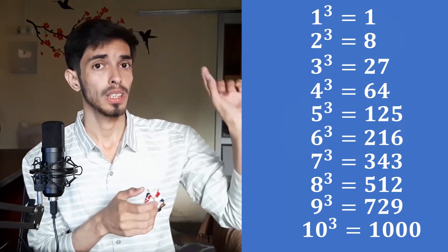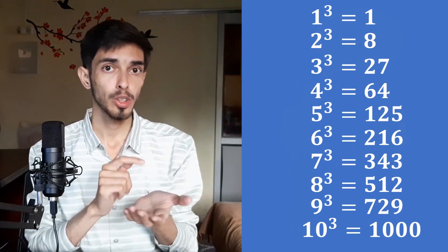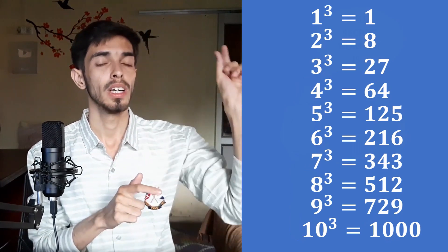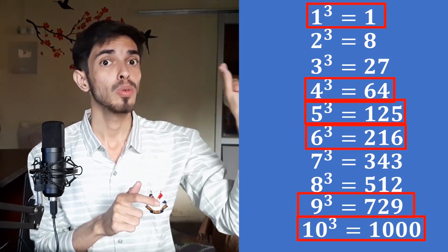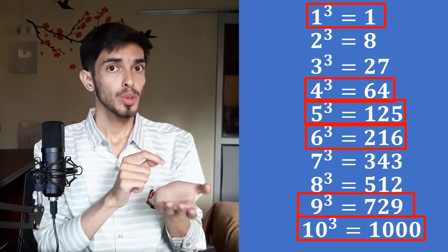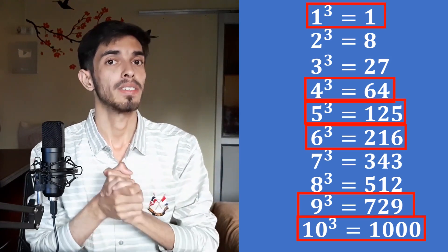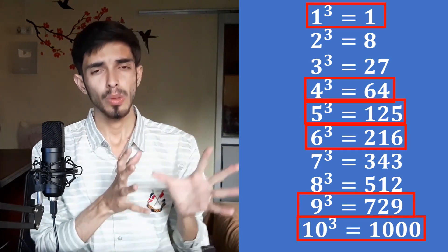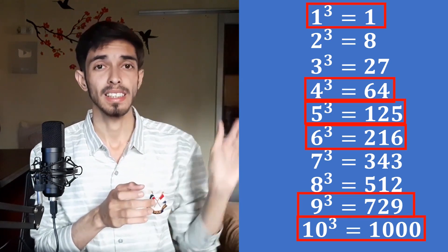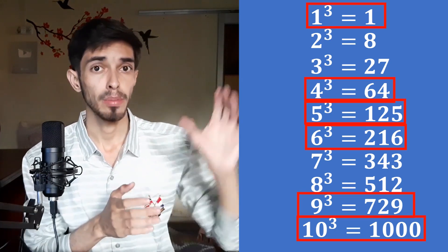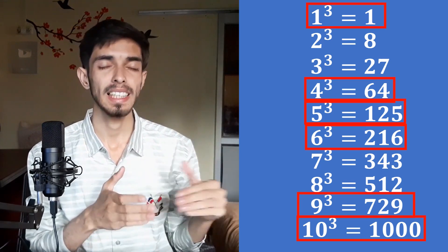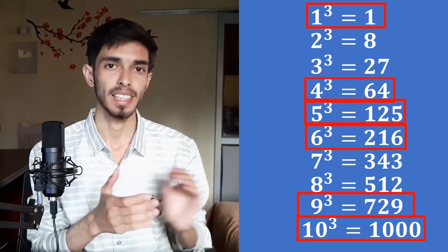Another thing you need to focus on is what digit each cube is ending with. It's really easy because for some numbers, the cube ends with that same digit. For example, for 1, 4, 5, 6, 9, and 10, the cube also ends with that same number. Take a minute and memorize this list, and if you can fluently memorize it, you will be able to do the trick really, really fast.